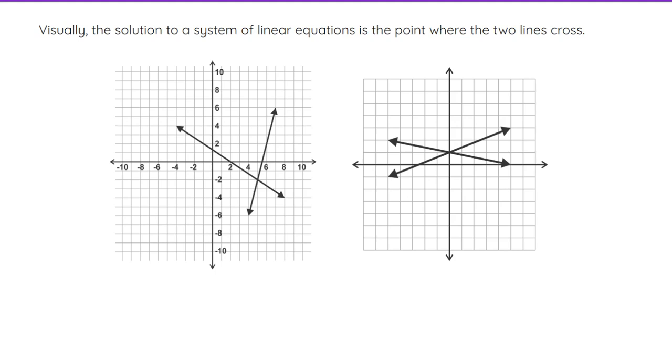So if we have two lines, and I give you two examples here, if we have two lines that are graphed on the same graph, the point where they cross, that ordered pair is going to be the solution to that system, because that is the only point where it is a solution to both of those equations. It's a point on both of those lines.